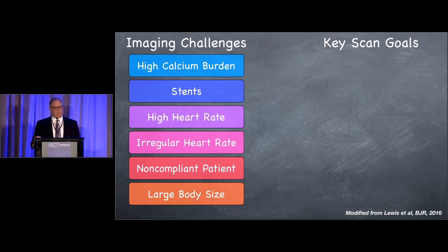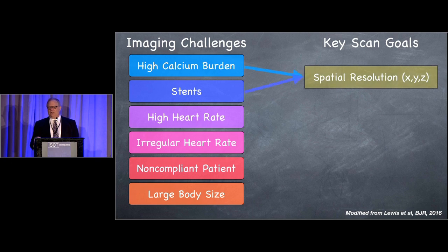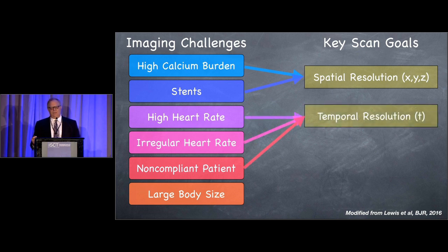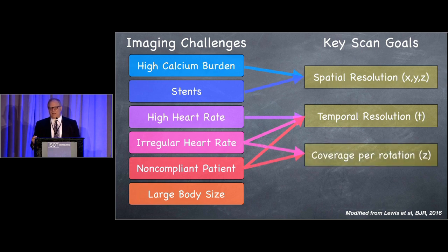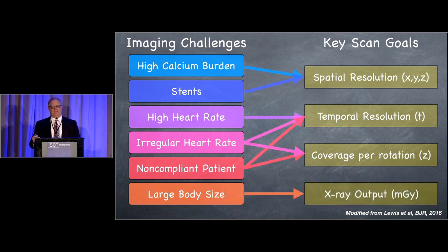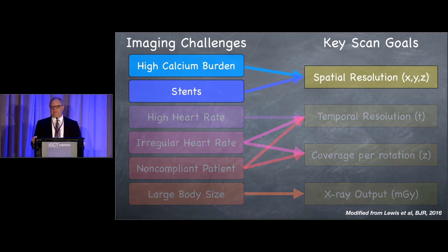These are some of the imaging challenges we face based upon the patients that present themselves to us. Particularly challenging are people with high calcium burden, people who come with stents, people with a high or irregular heart rate, non-compliant patients, and large patients. High spatial resolution would help with stents and calcium burden. High temporal resolution is what we need for high and irregular heart rates. A high degree of coverage per rotation and high X-ray tube output are also key properties.